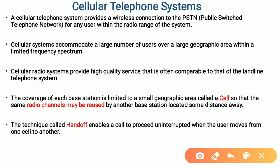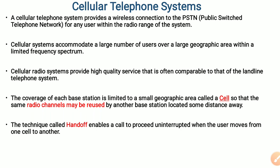The main feature of cellular telephone is that they can accommodate a large number of users within a limited frequency spectrum. Unlike other telephone communication systems, cellular radio systems can provide higher quality service than the ordinary landline telephone system.